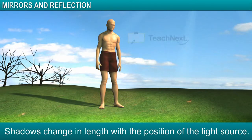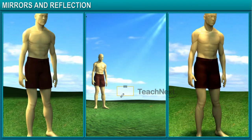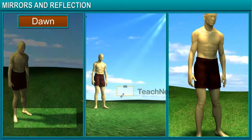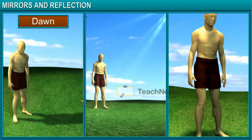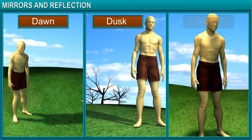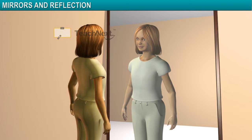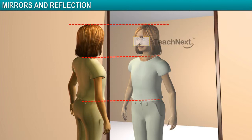Shadows change in length with the position of the light source. For example, your shadow changes in length with time as the position of the sun changes during a day. Your shadow will be longest at dawn or early morning and at dusk or early evening, whereas it will be shortest at noon. On the other hand, the image in a plane mirror doesn't change in size at all — it is always of the same size as that of the object.